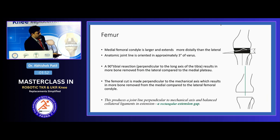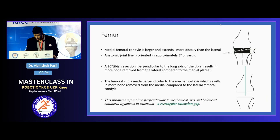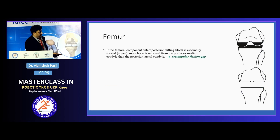The tibial cut is taken perpendicular to the mechanical axis of the tibia. The femoral cut is taken perpendicular to the mechanical axis of the femur, giving a balanced, parallel extension gap after soft tissue balancing. For the flexion gap, the tibial cut remains the same, but the articulating surface changes to the posterior condyles of the femur. To get a parallel flexion gap, the posterior condyle cut is made with the jig rotated externally.